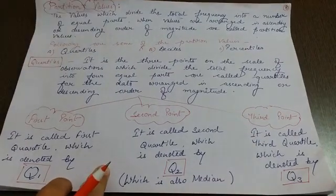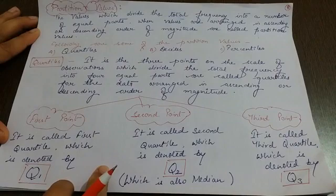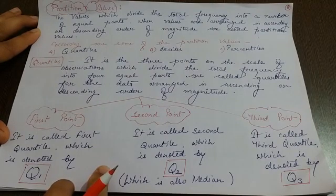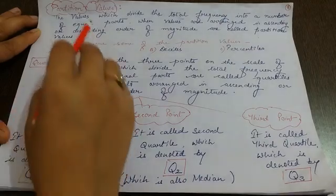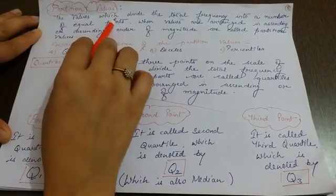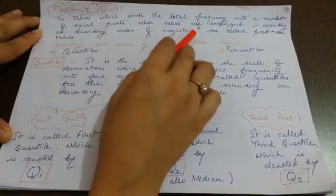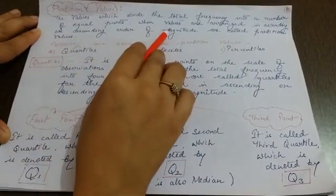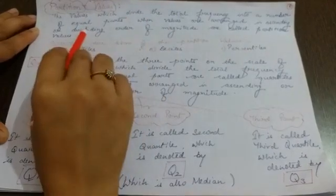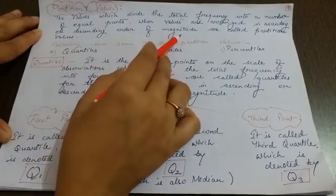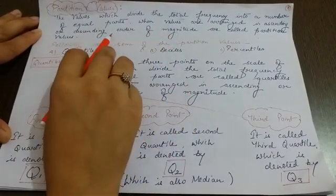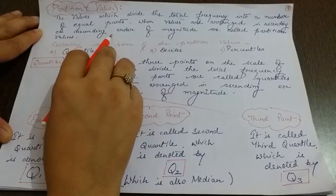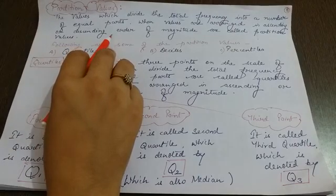A very good day to all of you. Today we are going to discuss the partition value. Before starting this topic, let me tell you the meaning of partition value. Partition values are those values which divide the total frequency into a number of equal parts when values are arranged in ascending or descending order of magnitude. Partition value means that you have a whole series of frequency.